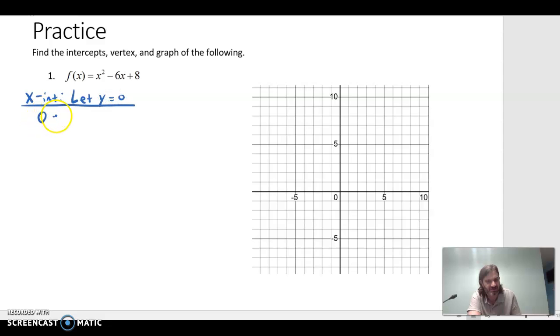So we'll change our function to 0 equals x squared minus 6x plus 8. You can factor this or use quadratic formula. It factors very nicely into x minus 2 times x minus 4. So the two solutions for that are 2 and 4. Our x intercepts are 2, 0, and 4, 0.